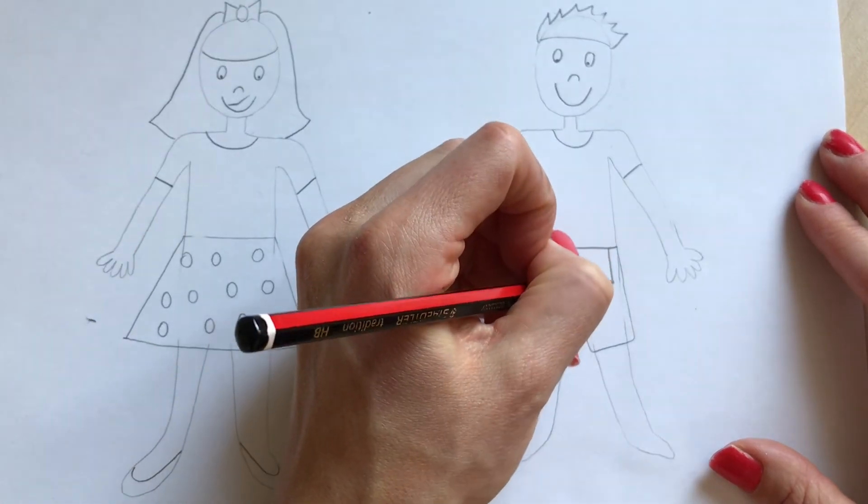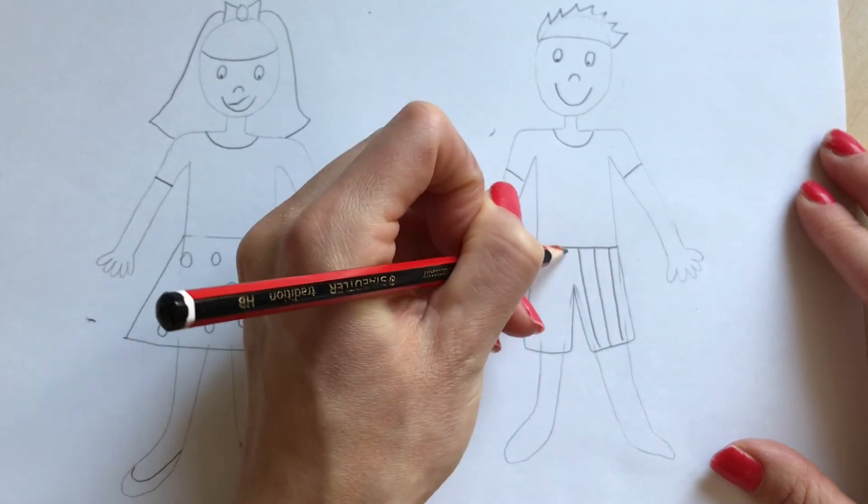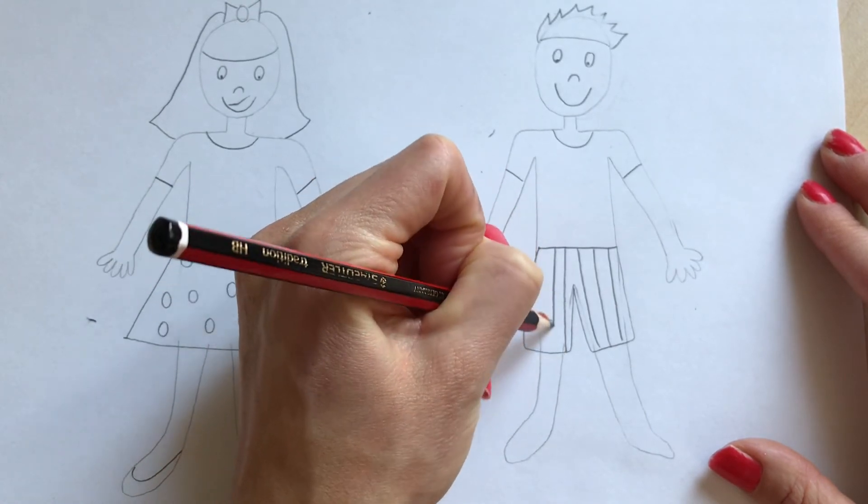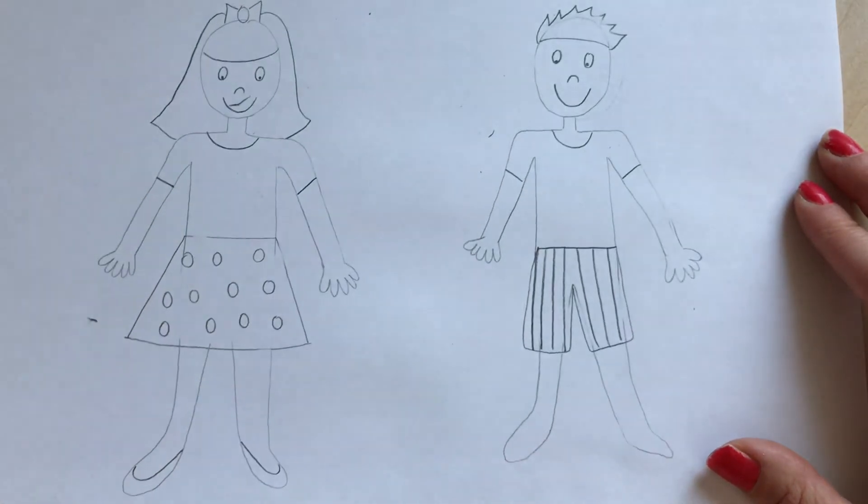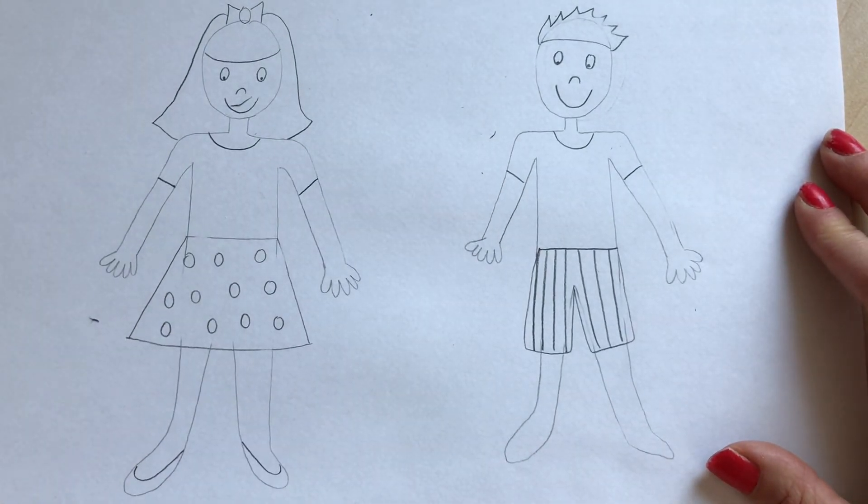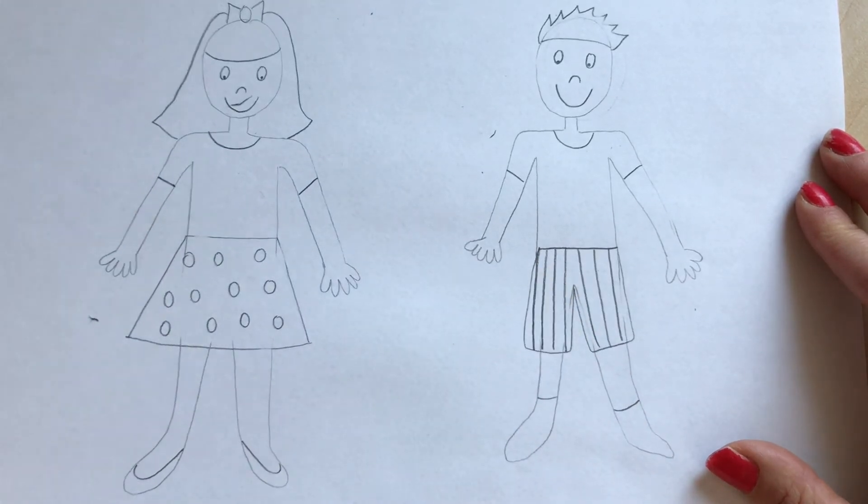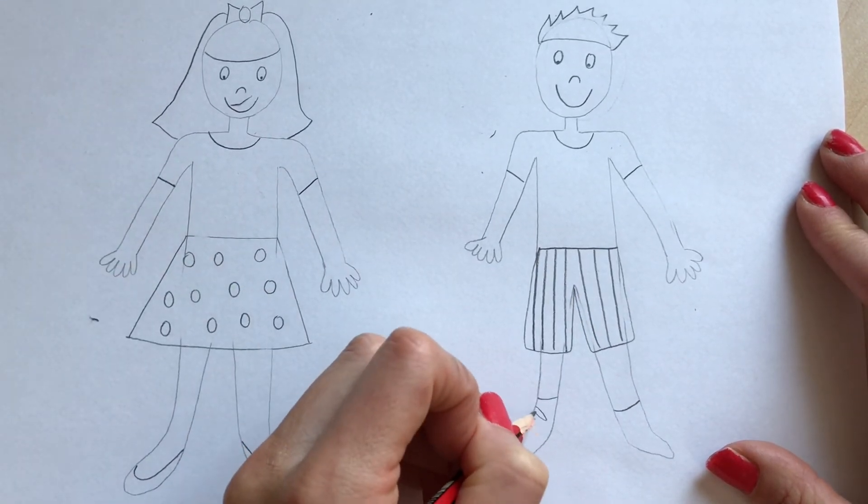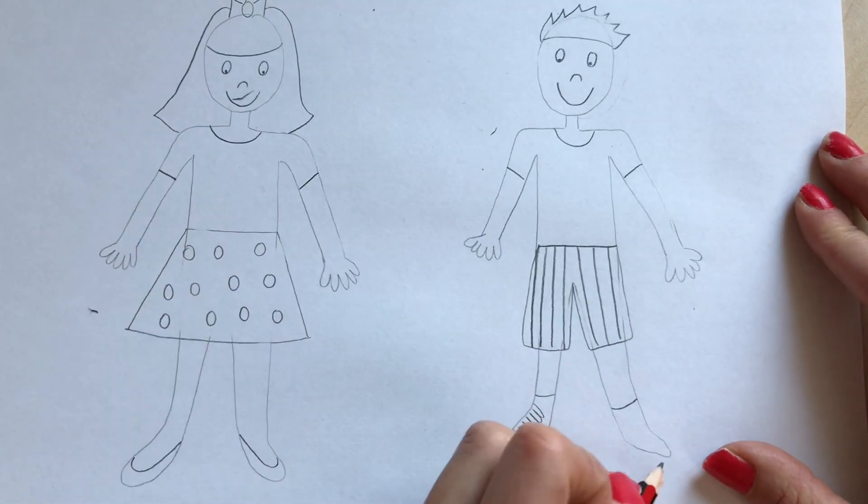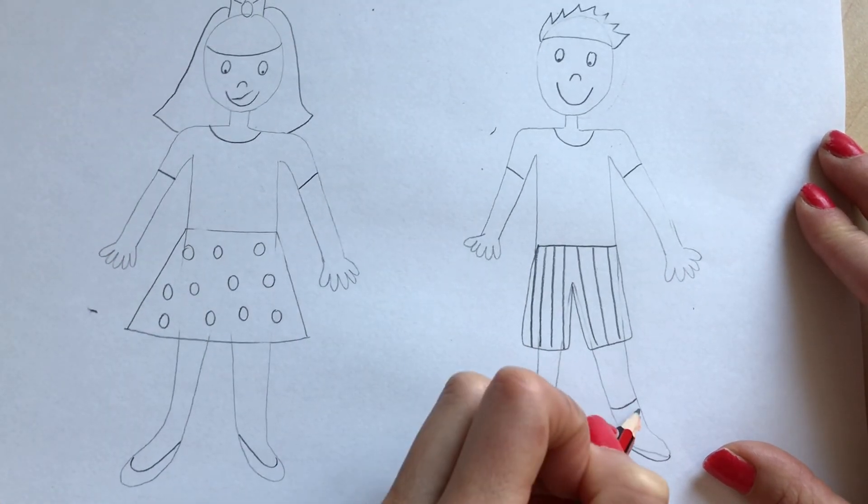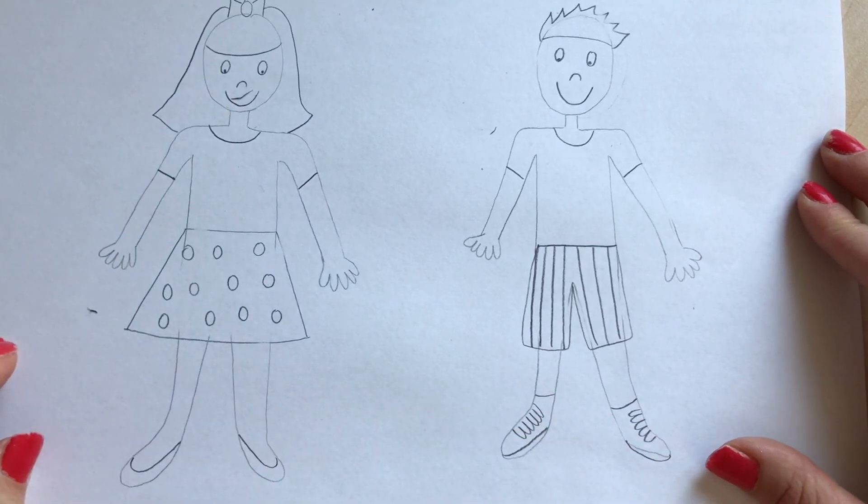Okay I'm going to give my boy some stripey shorts. There we have it. He's looking cool in his stripey shorts. There we go. And then he's going to be wearing some trainers. So I'm just going to put a line here and a line there and then I'm just going to give him some shoelaces for his trainer style shoes and then line up at the bottom. Same here. And there we have it.